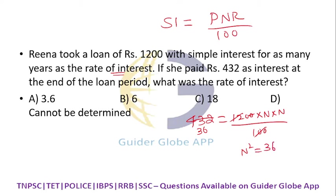So n² = 432 / 12, which gives n² = 36. Therefore n = 6. Since n equals the rate of interest, the rate of interest is also 6. The answer is 6 percent.